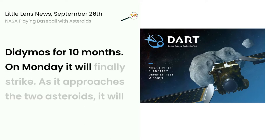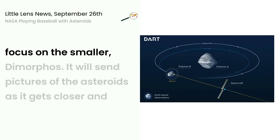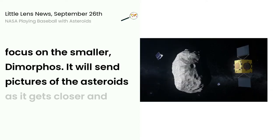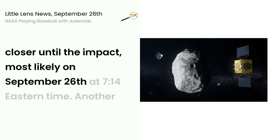On Monday, it will finally strike. As it approaches the two asteroids, it will focus on the smaller Dimorphos. It will send pictures of the asteroids as it gets closer and closer until the impact, most likely on September 26th at 7:14 Eastern Time.